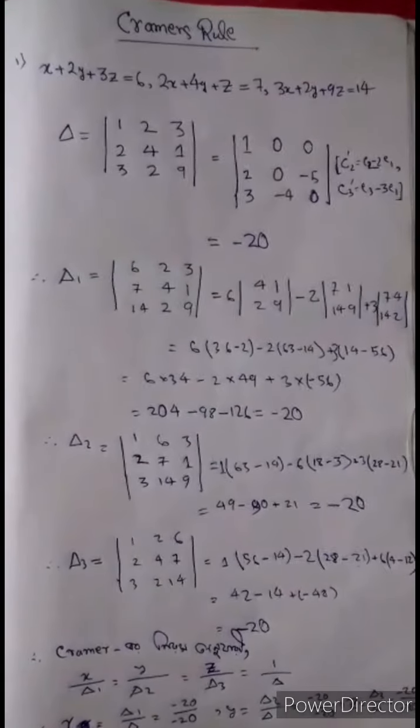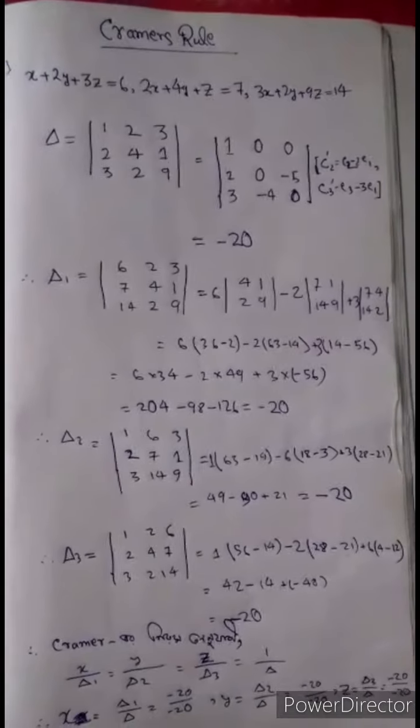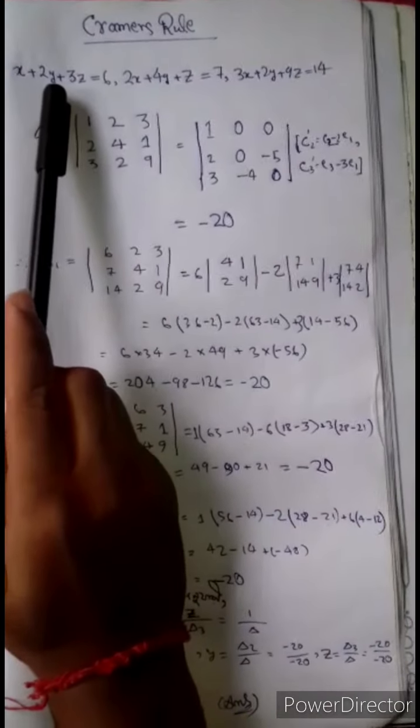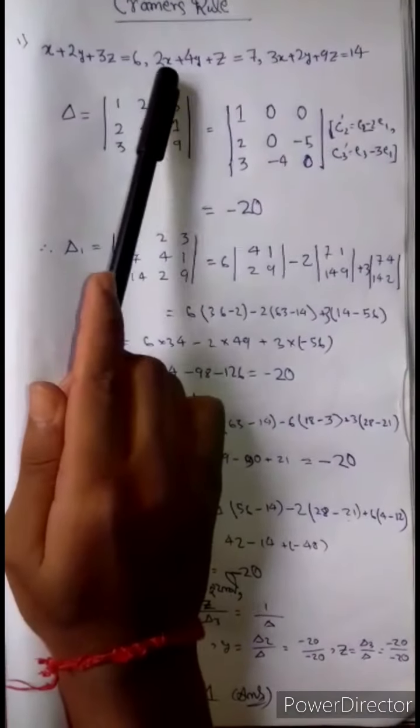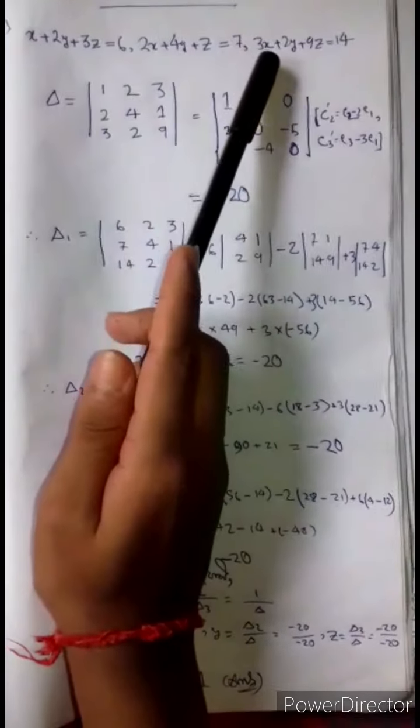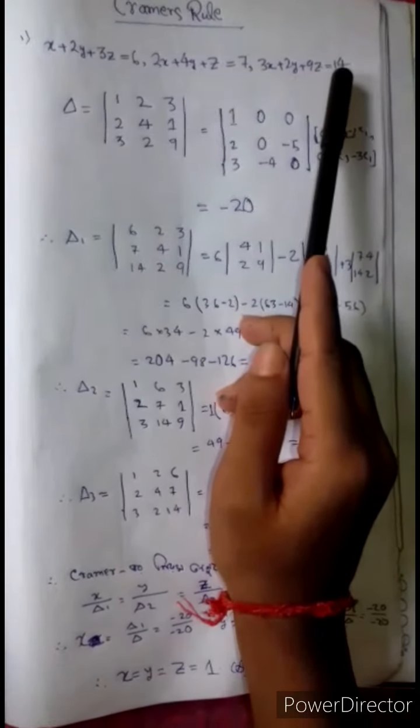Hello friends, let's solve this problem using Cramer's Rule. The system of equations is: x plus 2y plus 3z, 2x plus 4y plus 8 equals 7, 3x plus 2y plus 9z equals 14.